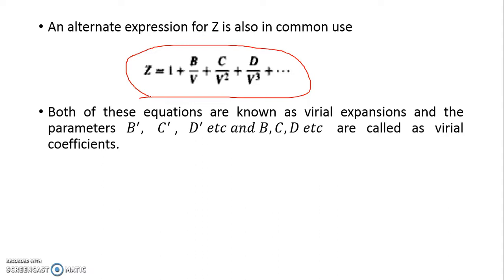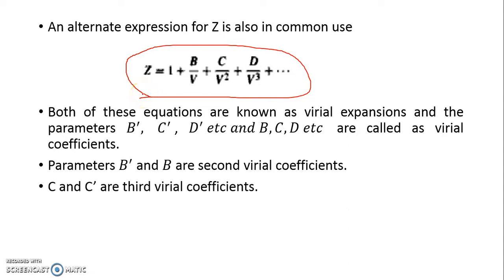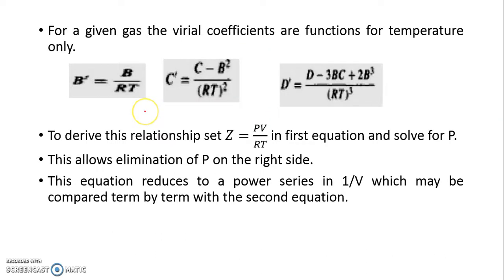Both these equations are known as Virial Expansions or Virial Expressions, and the parameters b dash, c dash, d dash and b, c, d are called Virial Coefficients. Parameter b dash and b are called second Virial Coefficient, and c dash and c are called third Virial Coefficient.